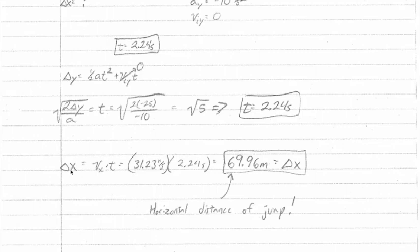So to find that, we have delta x equals vx times t. We take the 31.23 meters per second initial velocity and the 2.24 seconds we just calculated and get 69.96 meters equals delta x. And that is the horizontal distance of the jump.